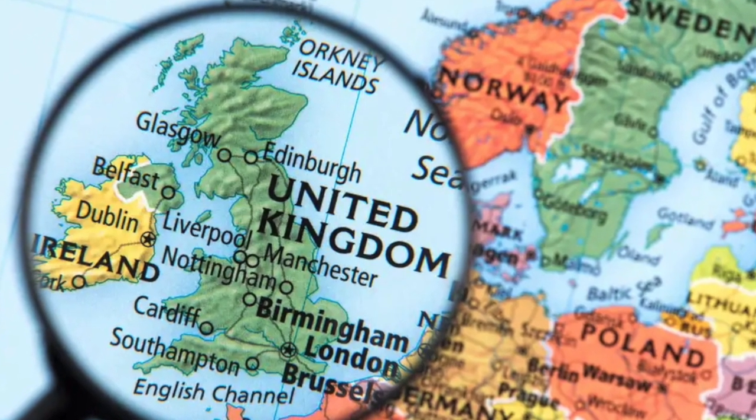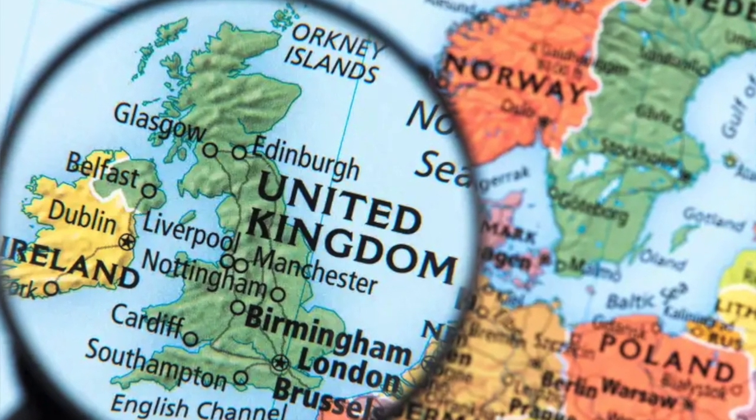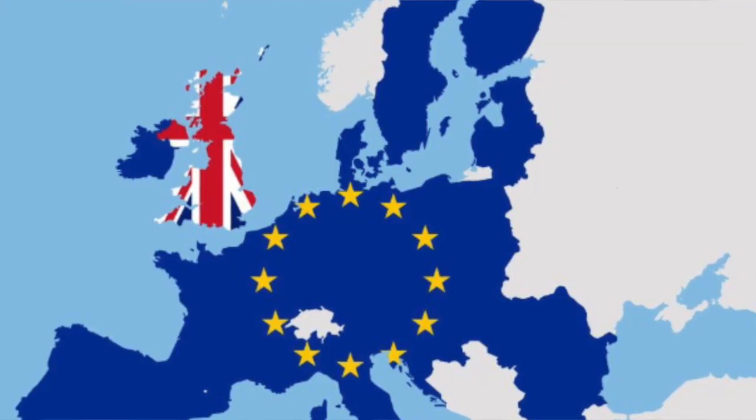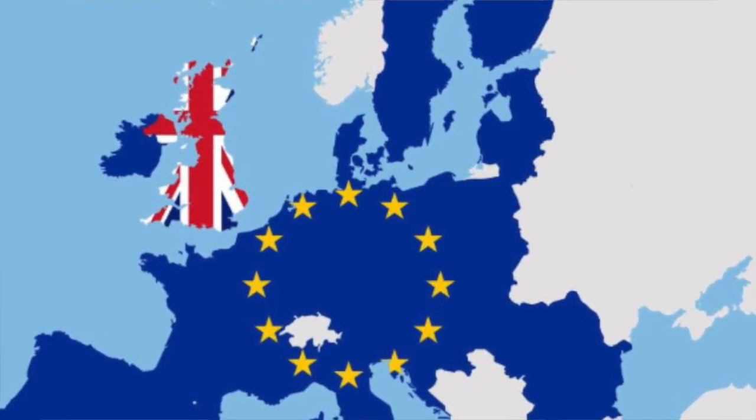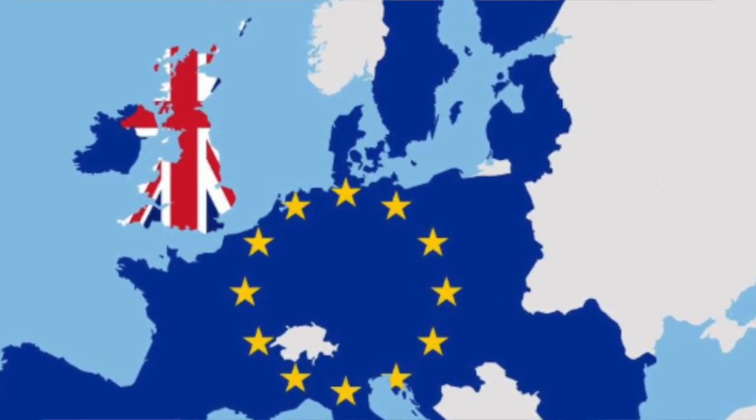Some of you might have heard of England before, or Great Britain — those places are basically just another name for the United Kingdom. The United Kingdom is on a continent called Europe. In Europe, they have an agreement between countries called the European Union. Basically what the European Union is, is all of the countries get together and they give a little bit of money so they can share certain things.